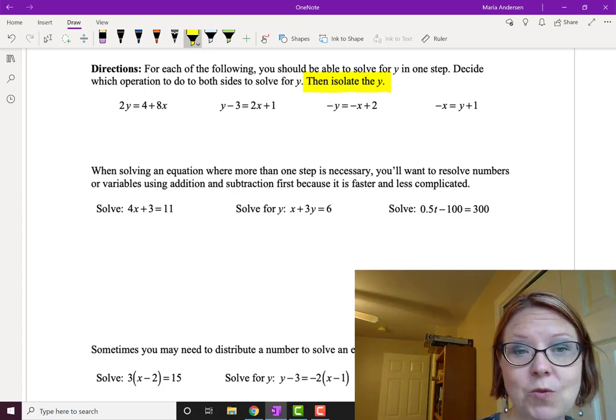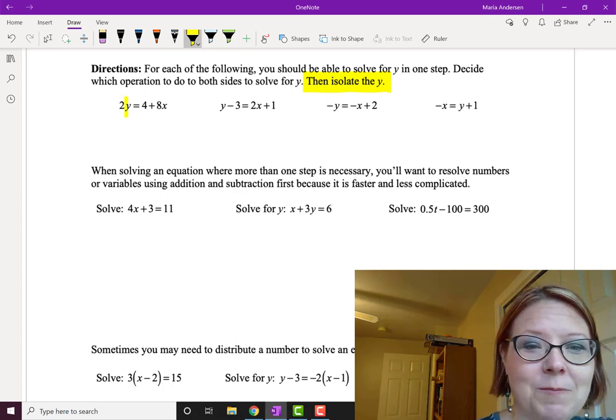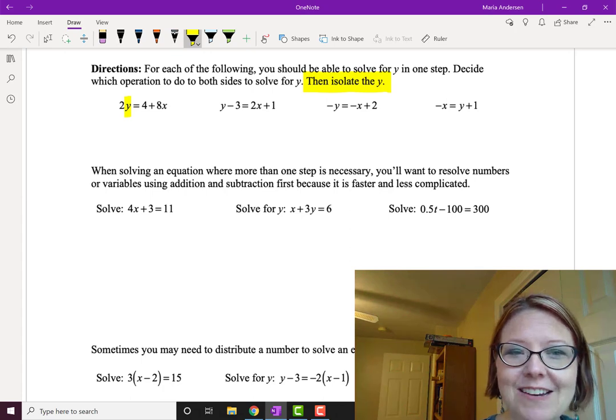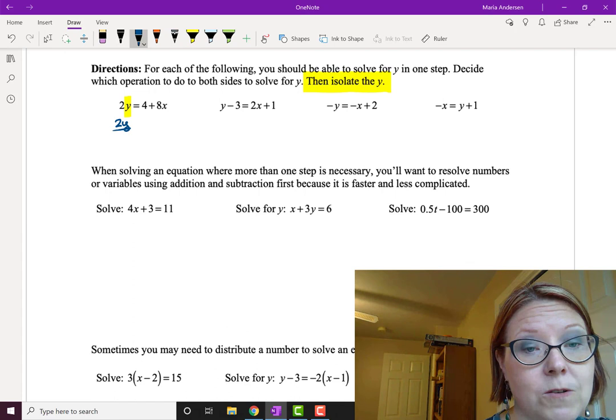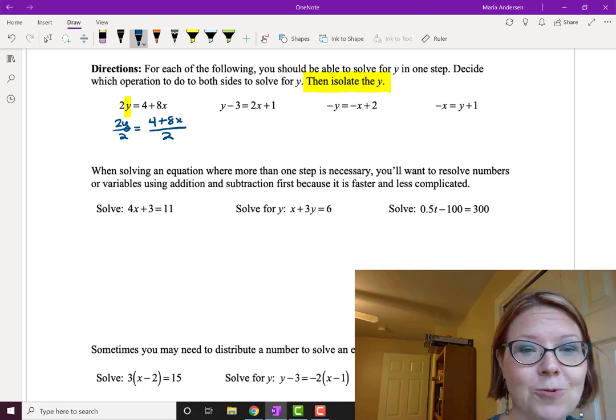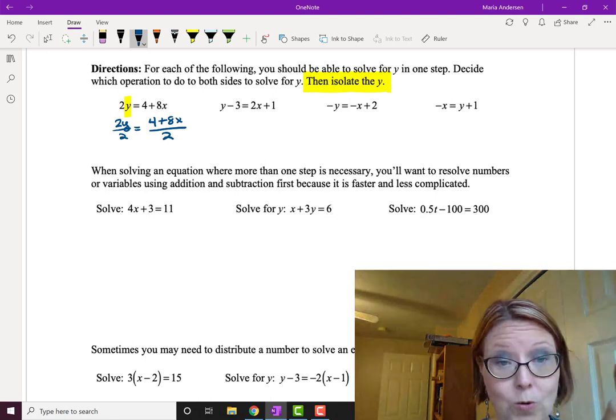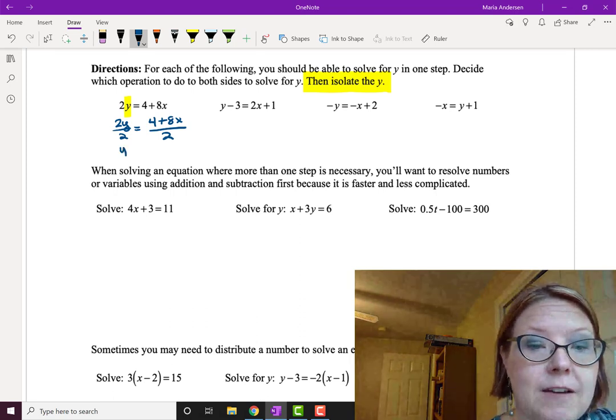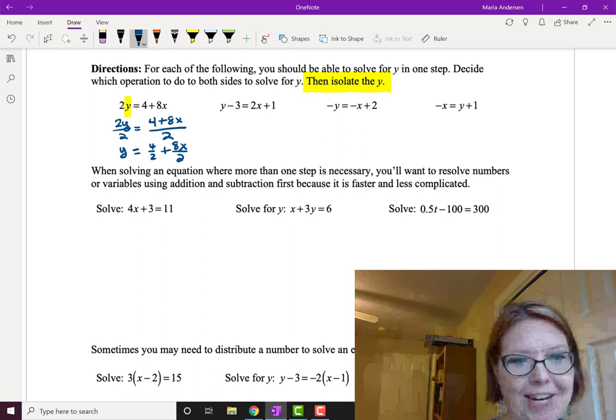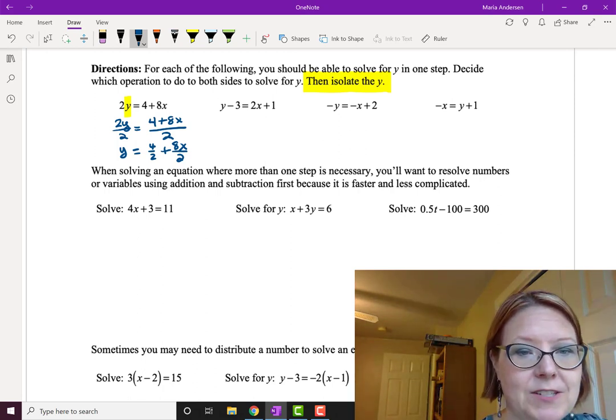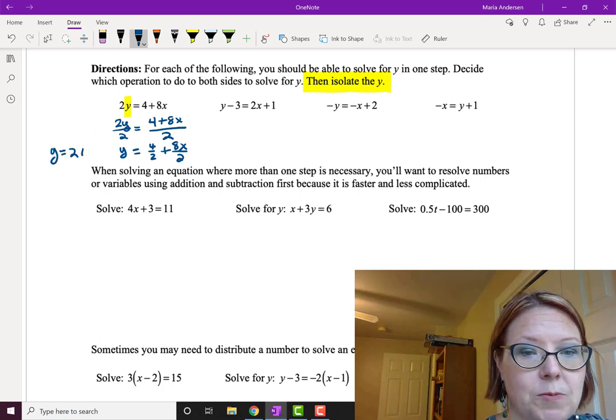So let's start with the first one. 2y equals 4 plus 8x. The y is the part that we're isolating. All we need to do is remove the 2 from the left hand side. It's currently 2 times y. So to remove that multiplication, I'm going to divide. So I'm going to do 2y over 2 equals 4 plus 8x, the whole quantity, over 2. That leaves me with y on the left equals, and then I can write this as 4 over 2 plus 8x over 2, which simplifies to y equals 2 plus 4x.